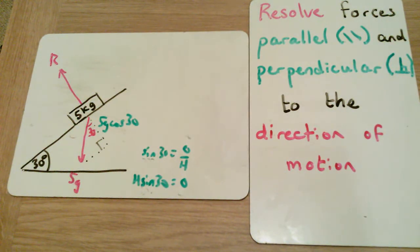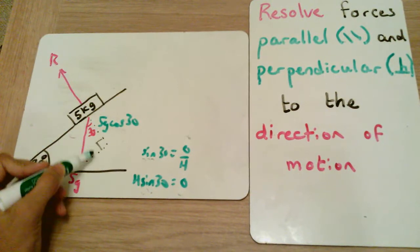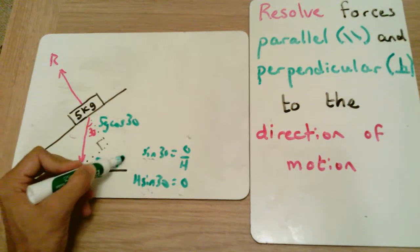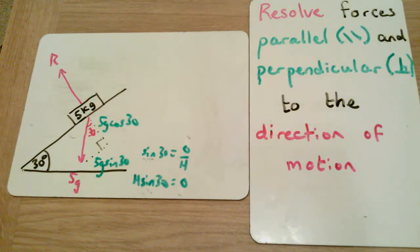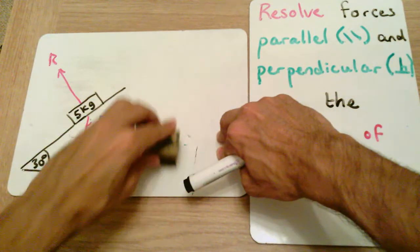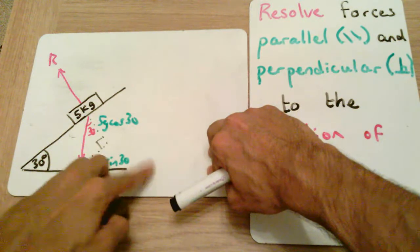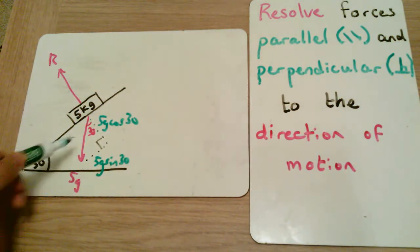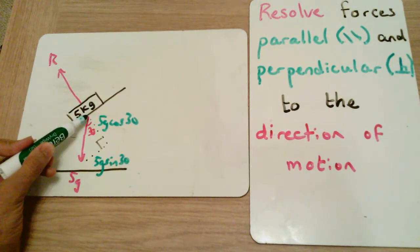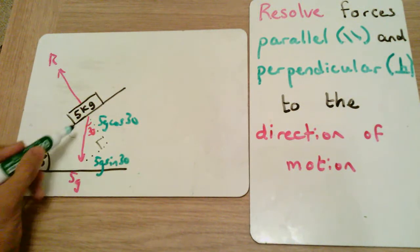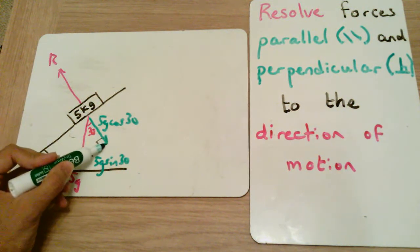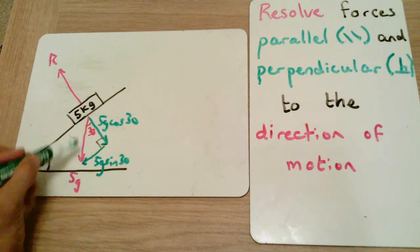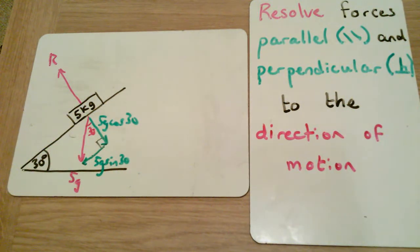This is always the case when resolving forces in a right angle triangle like this — the component opposite the angle is the hypotenuse times sine, and the adjacent component is the hypotenuse times cosine. Regarding direction: the weight acts vertically downwards, so following the vector tip-to-tail, we've resolved it into the parallel and perpendicular components correctly.